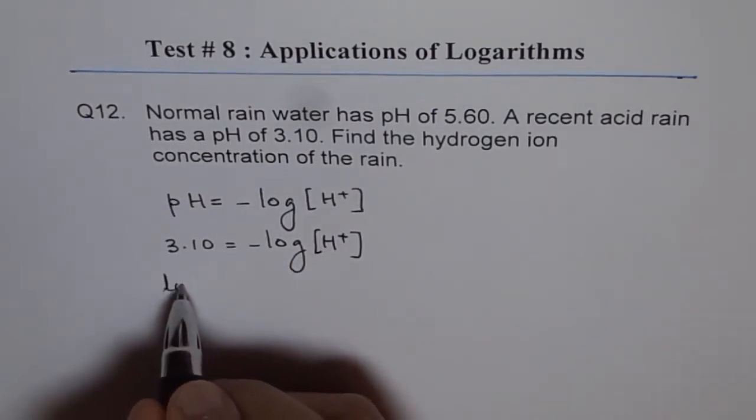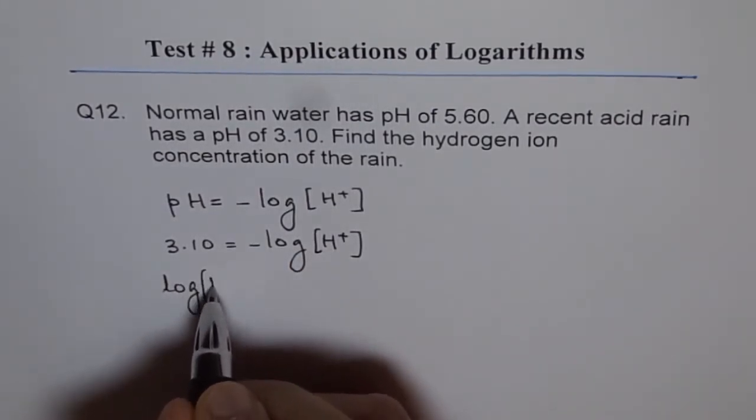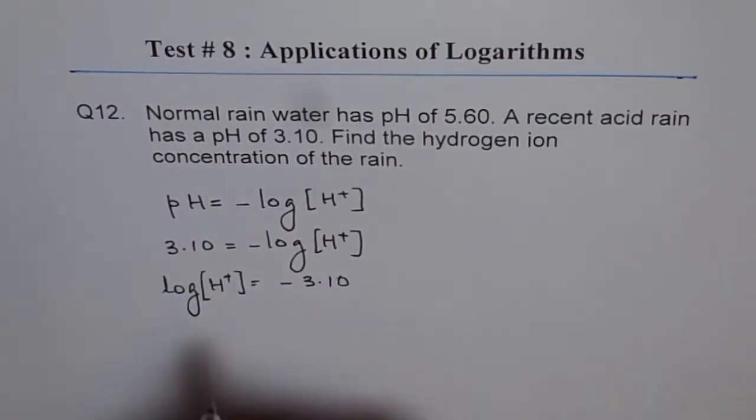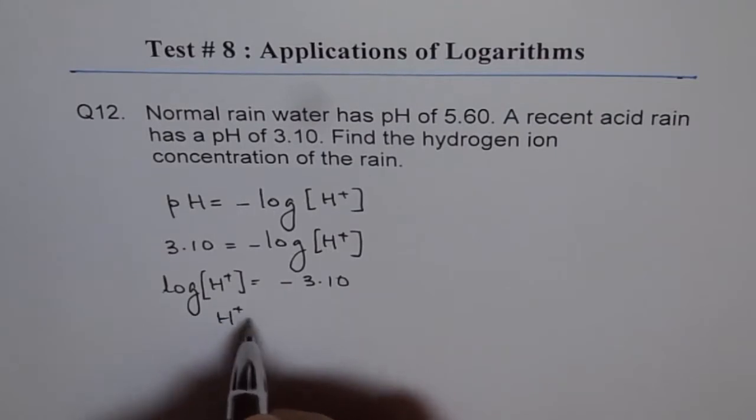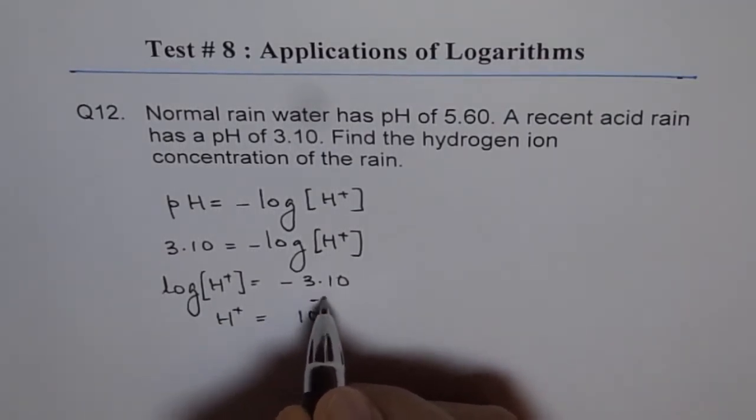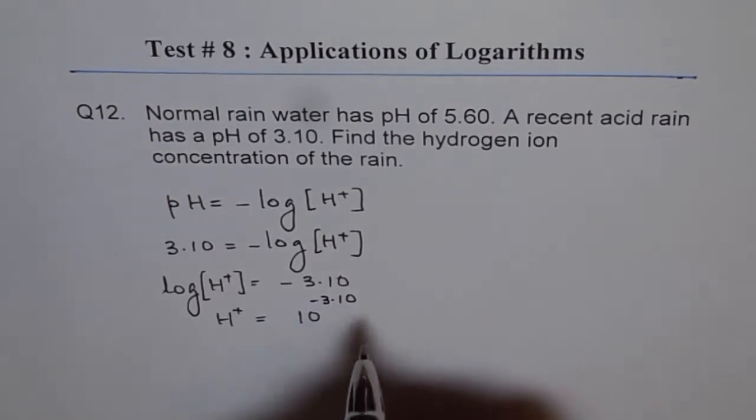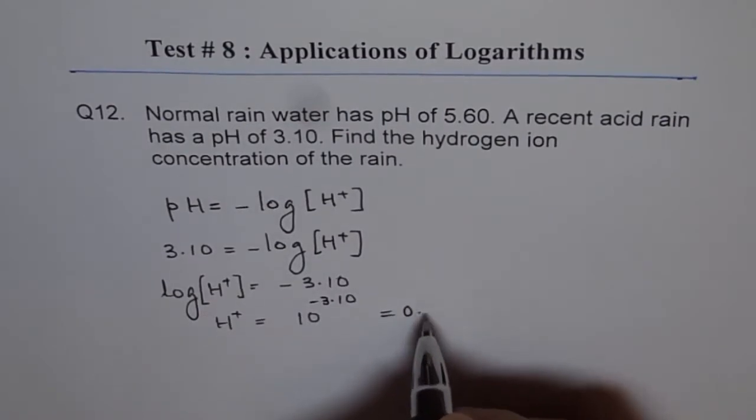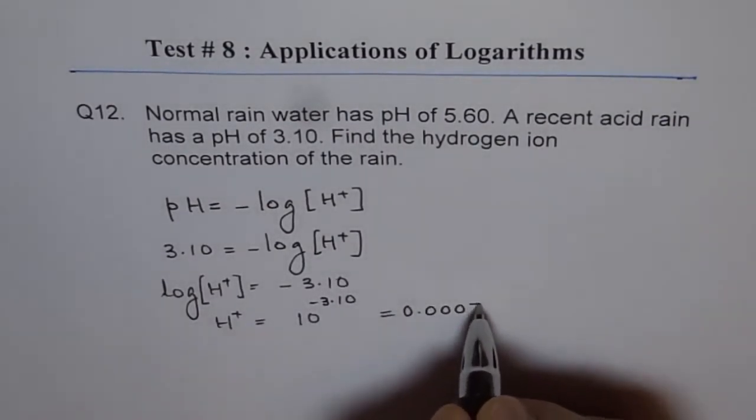We can write this as log of hydrogen ion concentration is equal to minus 3.10, or hydrogen ion concentration equals 10 to the power of minus 3.10, which is equal to 0.00079.